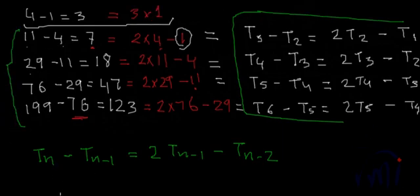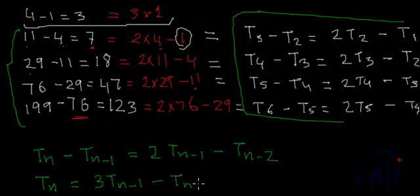On the right hand side we will have 3tn minus 1 minus tn minus 2.